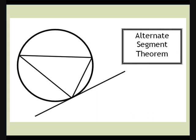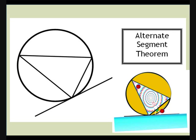Our final theorem is the alternate segment theorem. An angle between a chord and a tangent is the same size as the angle opposite the chord. I think it looks like somebody windsurfing in front of the sun, in which case the top of the sail is the same angle as the one by his or her feet.